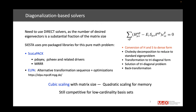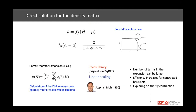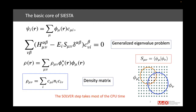With diagonalization methods, computational time scales as the third power of the matrix size, and memory scales quadratically. SIESTA remains competitive because its low-cardinality basis set means far fewer basis elements than typical plane-wave calculations. There is also another method for obtaining the density matrix: the density matrix is a combination of expansion coefficients — basically an outer product of the coefficient vectors.